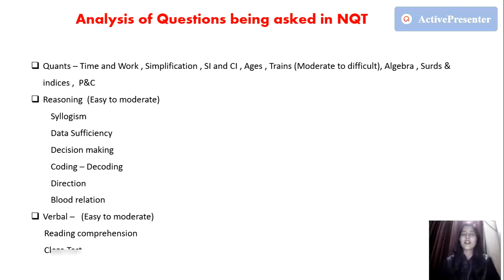After having proper analysis and conversation with the students who had NQT in today's slot, we came to know that these are the topics that are very important and many of the questions are being asked from them. For example, in Quants, mainly they are asking questions from time and work, simplification, SI and CI, ages, trains, algebra, surds and indices, and P&C.